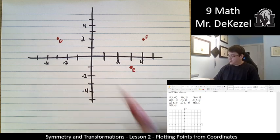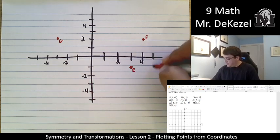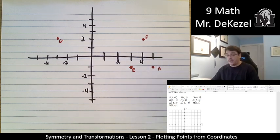Let's do H. So 1, 2, 3, 4, 5 to the right and down 1. Plus 5 and then minus 1. That is point H.